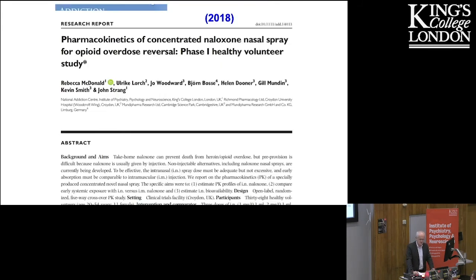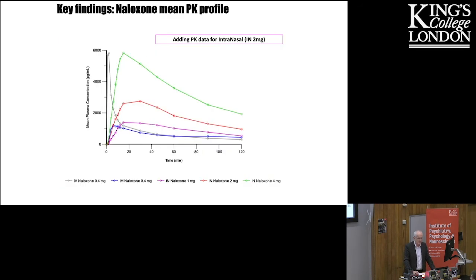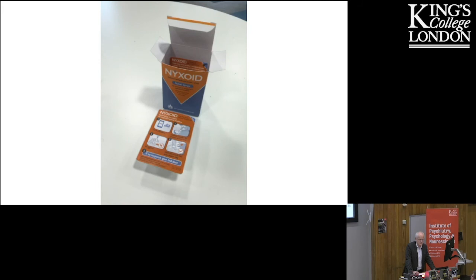Working with industry as well as with academic partners, we undertook pharmacokinetic studies to produce a new concentrated naloxone nasal spray. It became clear that the naloxone solution needed to be 20 times more concentrated and in much smaller unit volume. We identified from healthy volunteer studies that its bioavailability was between 40 to 50%, and it had sufficiently rapid speed of onset to address the emergency situation. It's now an approved new medicine with regulatory approval across Europe since 2018.